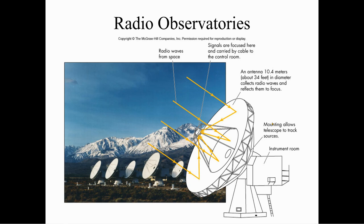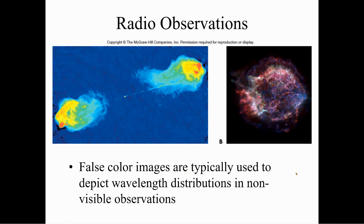Radio observatories — if you've watched the movie, you see they're using radio telescopes to pick up radio waves from outer space. Signals are focused and carried by a cable to a control room. An antenna that's 10.4 meters in diameter captures those signals. False-color images are typically used to depict wavelength distributions in non-visible observations — computers take things we can't see and form them into a colored image that we can see.